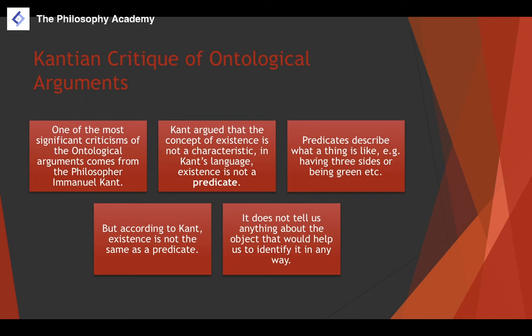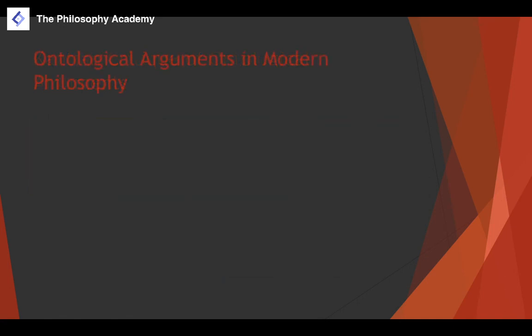For example, one of the characteristics of a cup might be that it is solid, a certain color, or a certain shape in order to hold liquid. You cannot describe a cup by saying it exists — that doesn't meaningfully characterize it. So existence cannot be a predicate, and therefore cannot be a characteristic of something. This is a big problem for ontological arguments, which rely on the assumption that existence can be a characteristic of God.